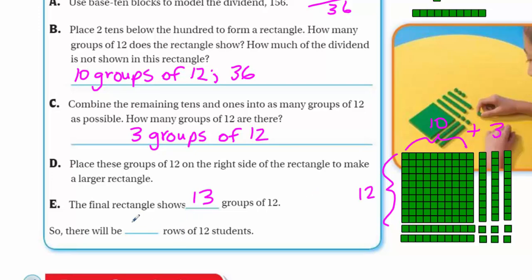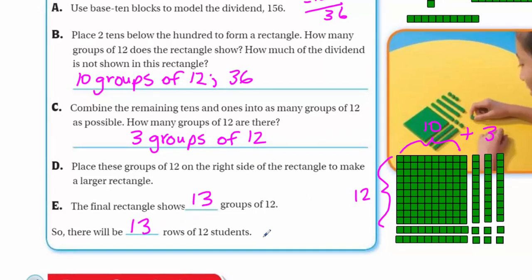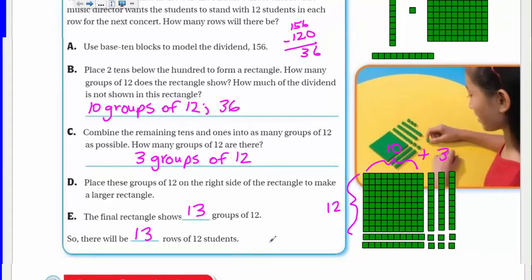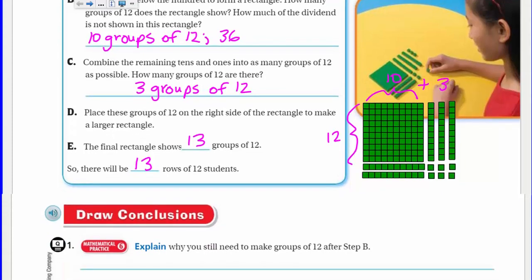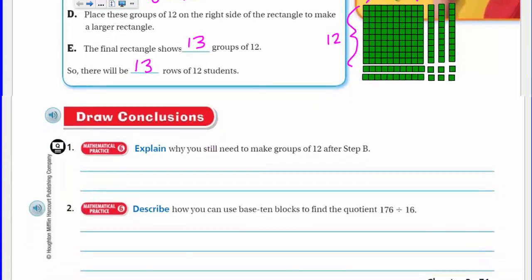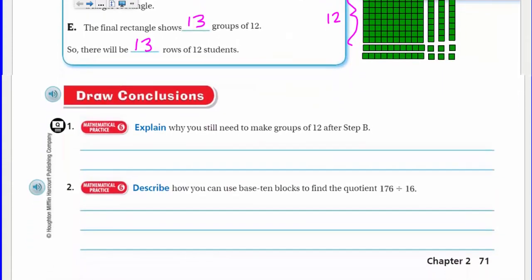Placing these groups on the right side of the rectangle makes a larger rectangle. The final rectangle shows 10 plus 3 — 13 groups of 12. There will be 13 rows of 12 students because we represented that dividend of 156. Let's move on down for some drawing conclusions.